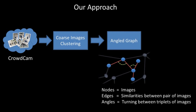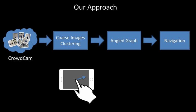These images are then organized into a weighted angled graph, where edges describe the similarities between pairs of images, and angles describe the turning of a hypothetical path between triplets of images. Once a user swipes his finger towards a direction, the system computes the smoothest path in that direction and starts the navigation.